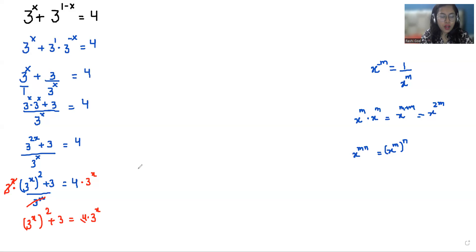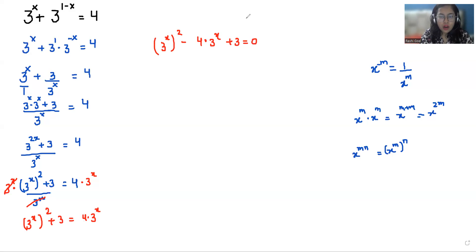Taking 4 times 3^x to the other side — the plus goes to subtraction. So (3^x)^2 minus 4 times 3^x plus 3 equals 0. Letting y = 3^x, we get y^2 minus 4y plus 3 equals 0.